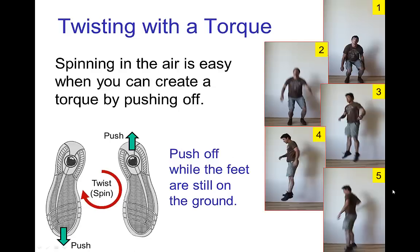If we think about how a character will rotate by exerting a torque, here's a simple example. Rick is going to jump into the air, turn, and land facing 90 degrees to one side. He creates a rotation by pushing off with his feet — not just upwards, but to the sides — in order to initiate a rotation while his feet are still in contact with the ground. With one foot he pushes back one way, the other foot pushes the other way, and the resulting reaction forces from the ground produce a torque, allowing him to twist.